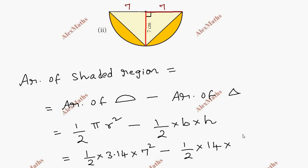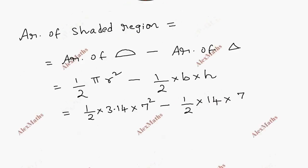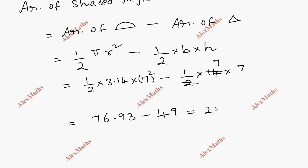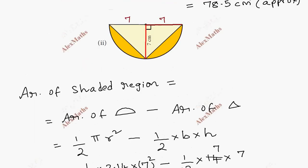So the total area: 1 cancels, 1 cancels with 7, simplifying — 49 into 3.14 divided by 2. Total 76.93 minus 49, subtracting gives 27.93 unit square.